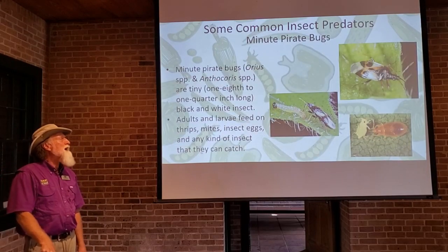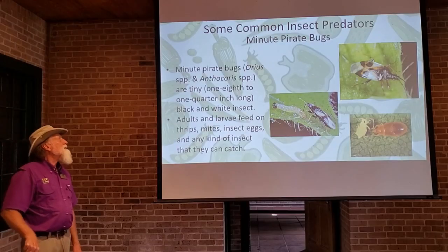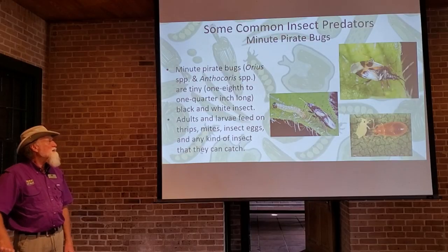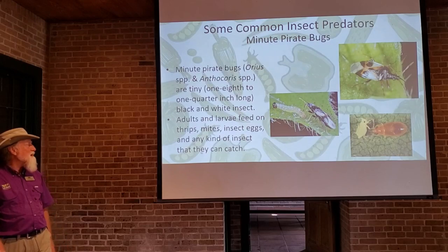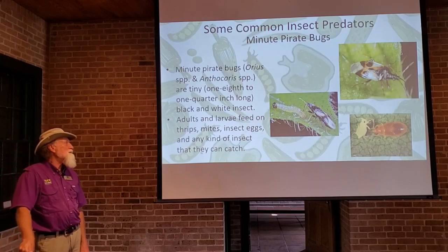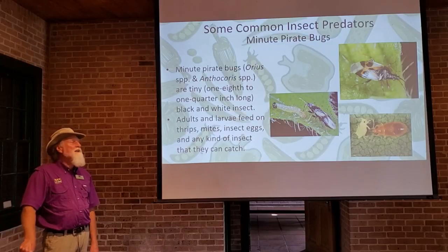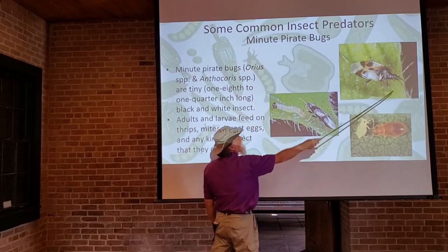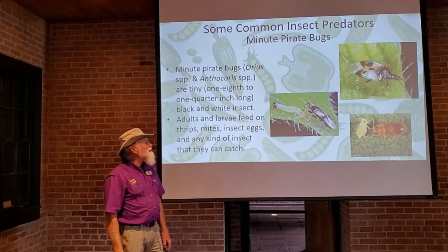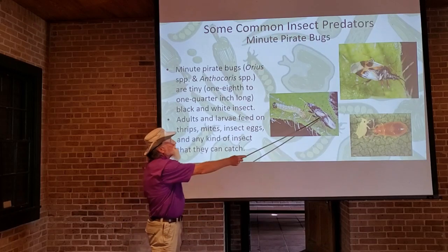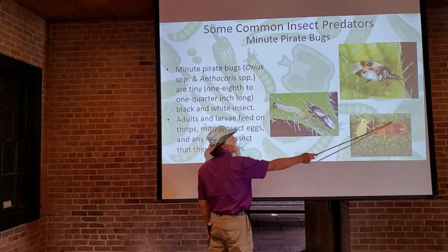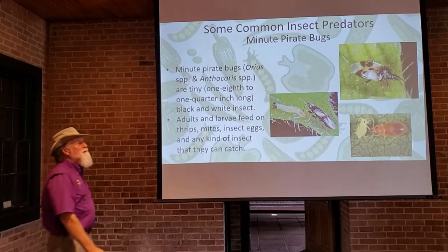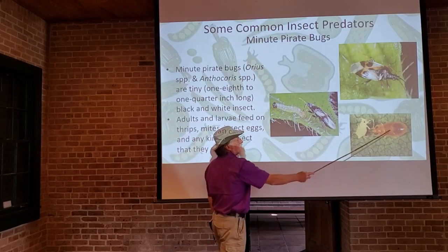Another group are the minute pirate bugs, from two different genera. They are very tiny — about a quarter of an inch long — usually black and white with various markings. Both adults and larvae feed on thrips, mites, insect eggs, and virtually any kind of insect they can catch. Here we see an adult minute pirate bug with a little snout it uses to pierce its prey, and a nymph feeding on an aphid.